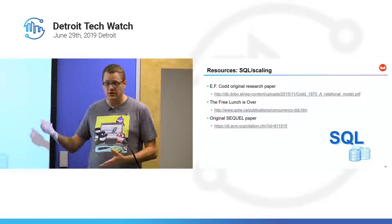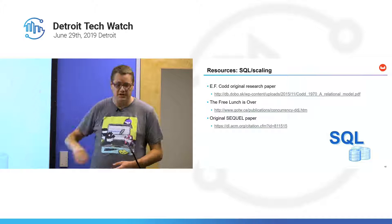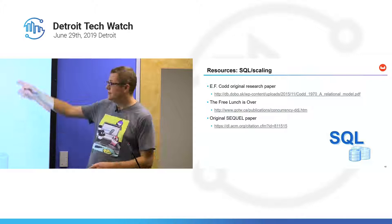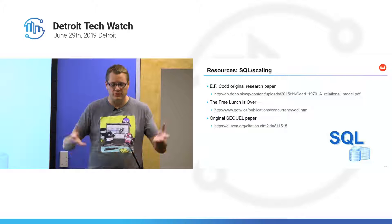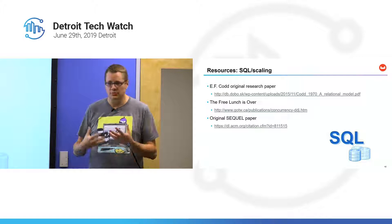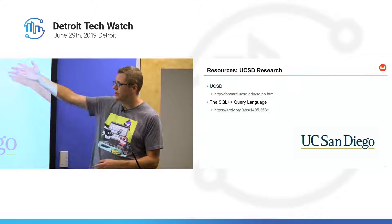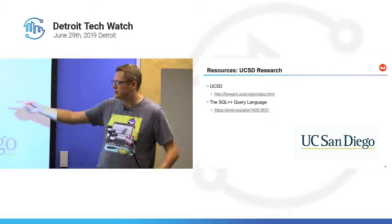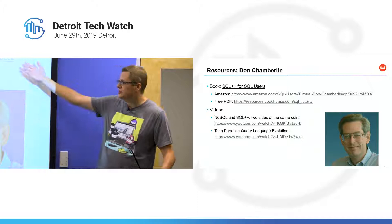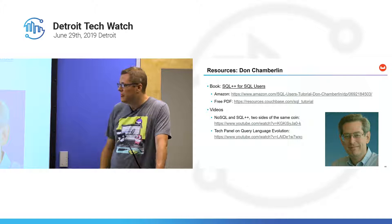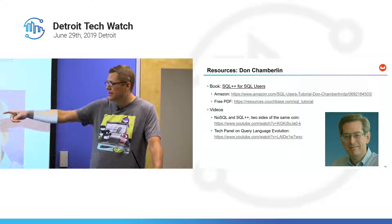Here are some resources — I'll share slides with a link at the end. There's EF-Codd's history, the Free Lunch article, and the original SQL paper — great history. Reading EF-Codd's 1970 paper with modern NoSQL databases in mind, it's amazing how prescient he was. UCSD has a FORWARD project, and there's a free white paper on SQL++ published by Cornell. Don Chamberlain has a book — a pretty easy read — and Couchbase has a free PDF. Some great videos including the 'squint hard' video and a larger tech panel on query language evolution.